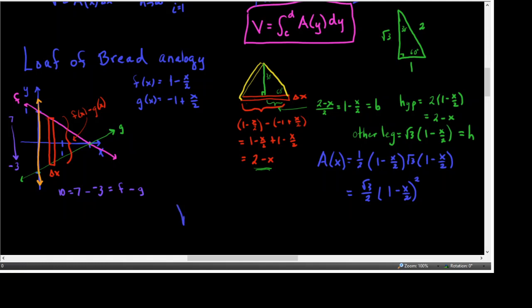The volume is the integral. Since it's a Δx integral, we go from the lowest x of the region to the highest x. The region goes from x = 0 to the intersection point where x = 2. So the volume is ∫₀² (√3/2)(1 − x/2)² dx. Note: if we'd accidentally used dy, it would go from −1 to 1, giving a different setup entirely, so it's good we used dx.